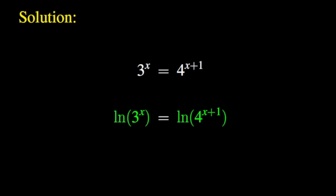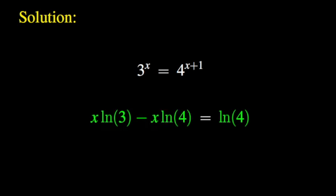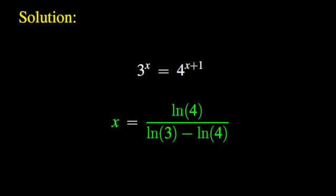Now let us look at irrational solutions to this equation. We take the natural logarithm of both sides. Using the properties of the natural logarithmic function, the left-hand side becomes x times the natural log of 3, and the right-hand side becomes the quantity x plus 1 times the natural log of 4. This is now a simple first-order equation. We move all terms involving x to the left-hand side and everything else to the right-hand side, then factor x out on the left-hand side and solve for x. Finally, we find that the unique irrational solution is the natural log of 4 divided by the quantity natural log of 3 minus natural log of 4.